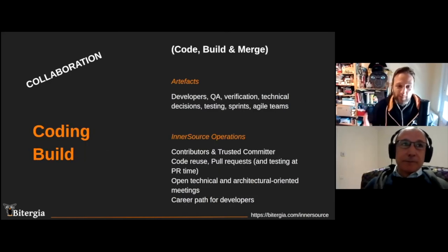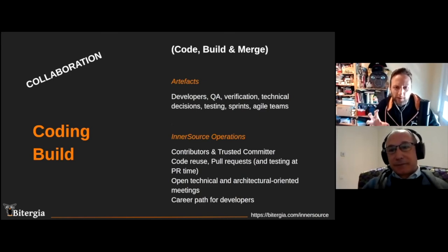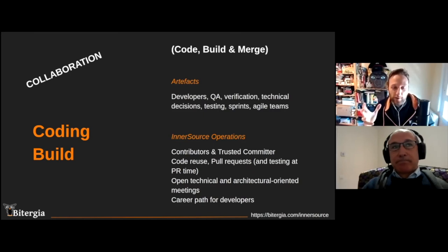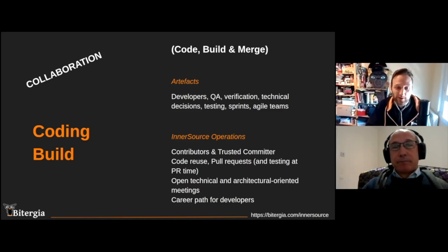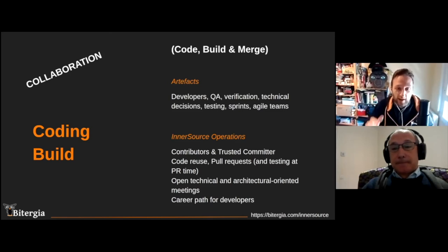When we have this open backlog, we start translating it into code. There are artifacts like developers, quality assurance, verification processes, technical decisions, testing, sprints, and agile teams. Moving this into an InnerSource operations flavor, we think about contributors and trusted committers instead of just developers or agile teams. We consider reusing existing code — why reinvent the wheel? New processes come into place: pull requests, testing, code review processes. All of this is open and transparent for everyone to participate in the conversations, at the technical level or at the idea inception level, with the process explicitly documented in each project.